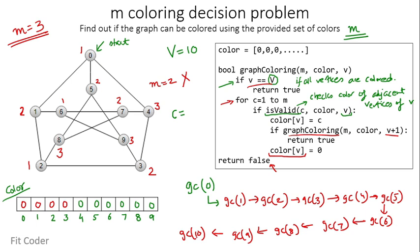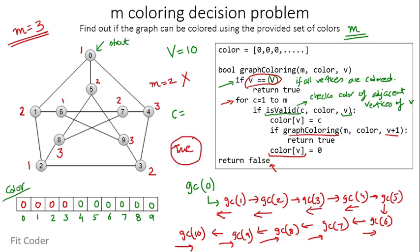When we arrive at GC(10), we check the base condition: V equals capital V, both are 10. This means all vertices are colored, so we return true. True is returned back to the first calling function, and at the end we return true — meaning for M=3 graph coloring is possible.